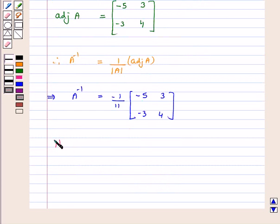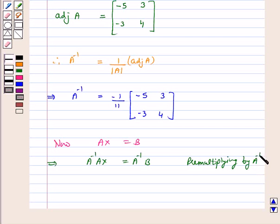Now AX is equal to B implies A inverse AX is equal to A inverse B by pre-multiplying both sides by A inverse. This implies IX is equal to A inverse B.